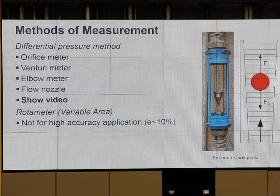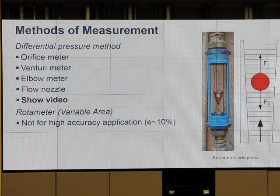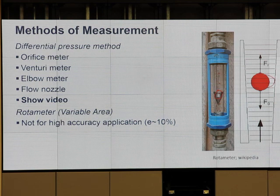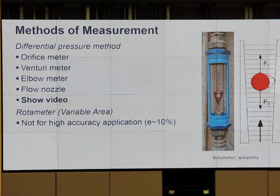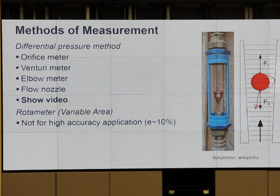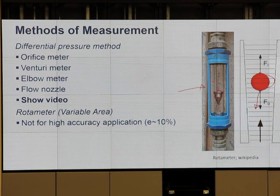The rotameter has a ball inside a tapered tube. Flow lifts the ball upward while gravity pulls it down; the equilibrium position indicates the flow rate. This measures gas flow rate, but it's not high accuracy — it's okay, but most of the time we need to know more precisely. It may be usable near surface pressure conditions.